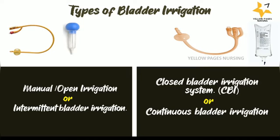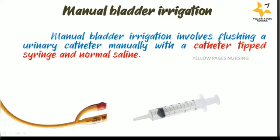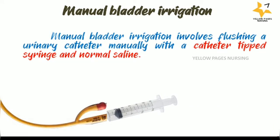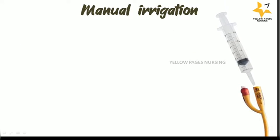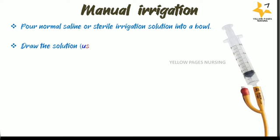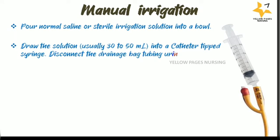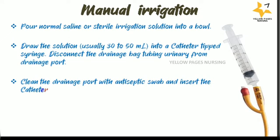Manual bladder irrigation involves flushing a urinary catheter manually with a catheter-tipped syringe and normal saline. The procedure involves pouring normal saline or sterile irrigation solution into a bowl, drawing 30 to 60 ml into a catheter-tipped syringe, disconnecting the drainage bag from the drainage port, cleaning the drainage port with an antiseptic swab, and inserting the catheter-tipped syringe.